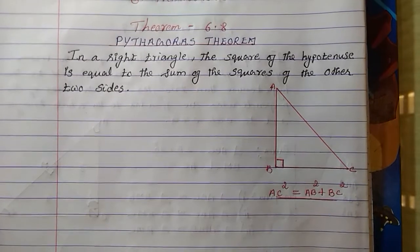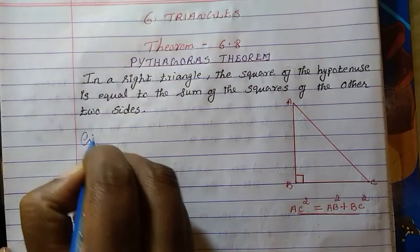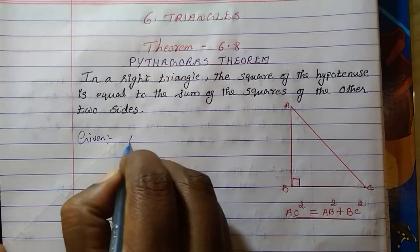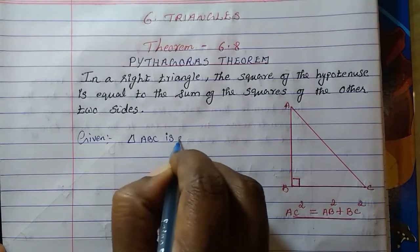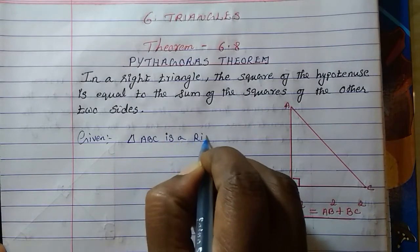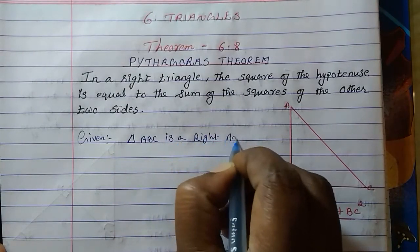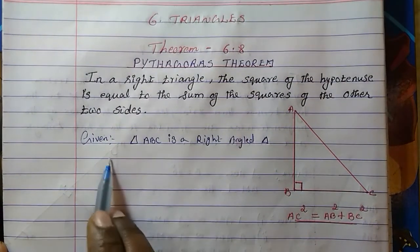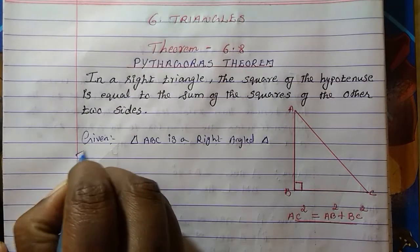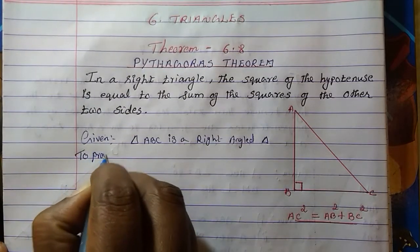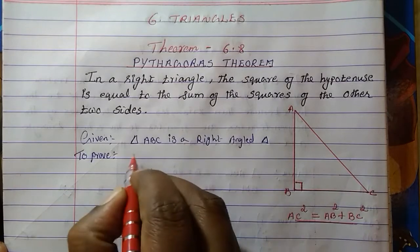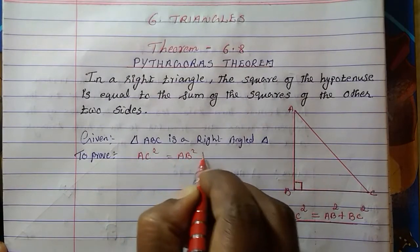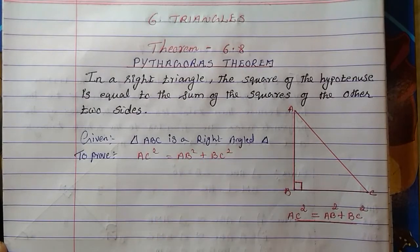Let's first write down what is given to us. What is given to us is that triangle ABC is a right triangle. Then what we have to prove: we have to prove that AC squared is equal to AB squared plus BC squared.